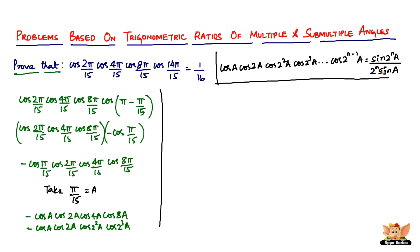So we're going to use this particular expression now. So what it's going to become is minus sine 2 to the power n a. So the n if you see here, the largest value is 3, so the n is going to be 3 plus 1, so it becomes 2 to the power 4 a divided by 2 to the power 4 sine a.